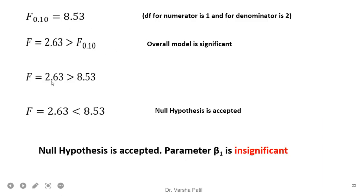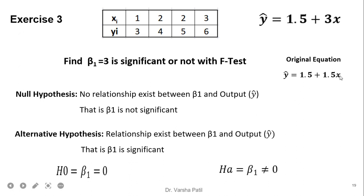Since 8.53 > 2.63, we accept the null hypothesis and conclude that parameter β₁ is insignificant. This confirms that the purposely changed equation with coefficient 3 does not produce a significant variable. However, if you solve the problem using the original correct equation (Ŷ = 1.5 + 1.5X), you will find that the β₁ parameter of 1.5 is indeed significant.